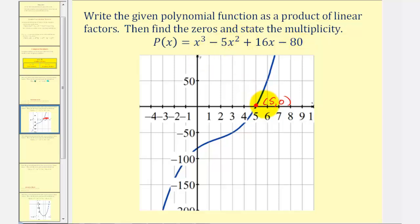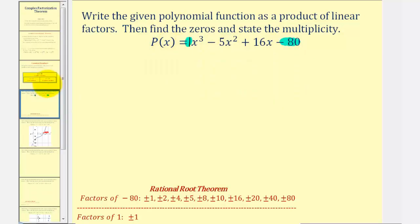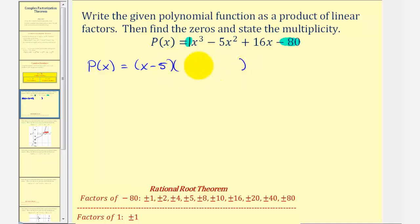Therefore five is a zero of the given polynomial function. If five is a zero, then x minus five must be a factor. So we can write p(x) as x minus five times a degree two quadratic factor. In order to find that quadratic factor, we'll take the given polynomial and divide by x minus five using synthetic division.